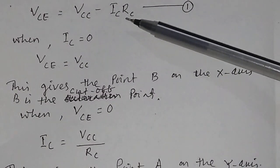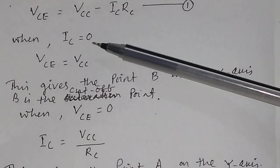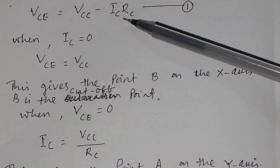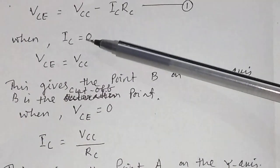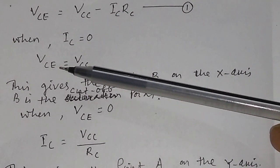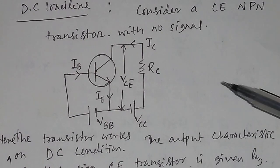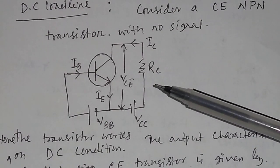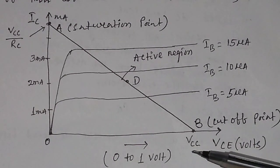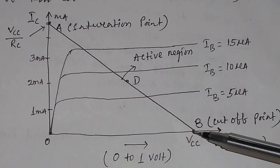So VCE will be equal to VCC minus IC times RC. When the collector current IC is equal to zero — meaning no current flows through the load resistance RC — then VCC equals VCE. This gives the point B on the x-axis, and this point B is called the cutoff point.